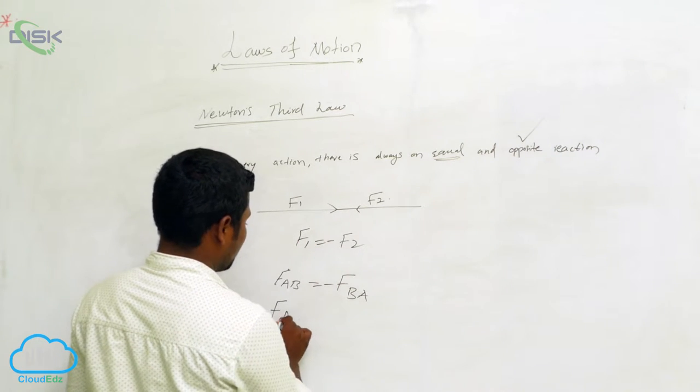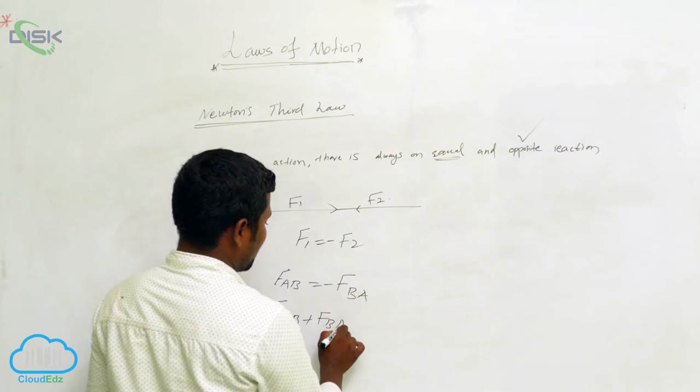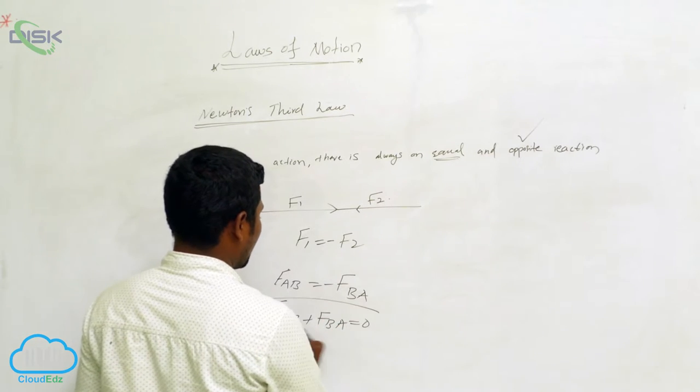Then what happened? FAB plus FBA is equal to zero.